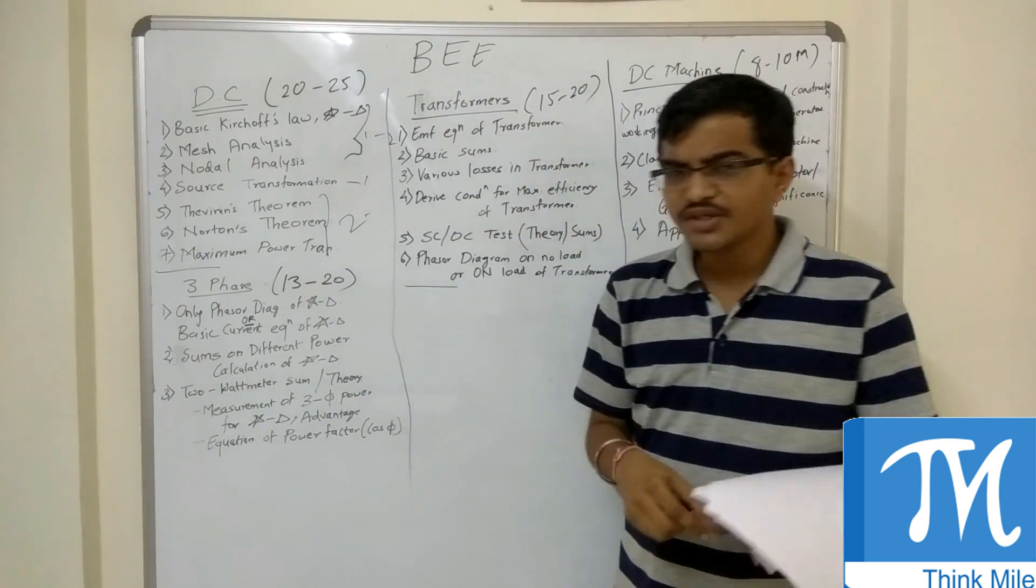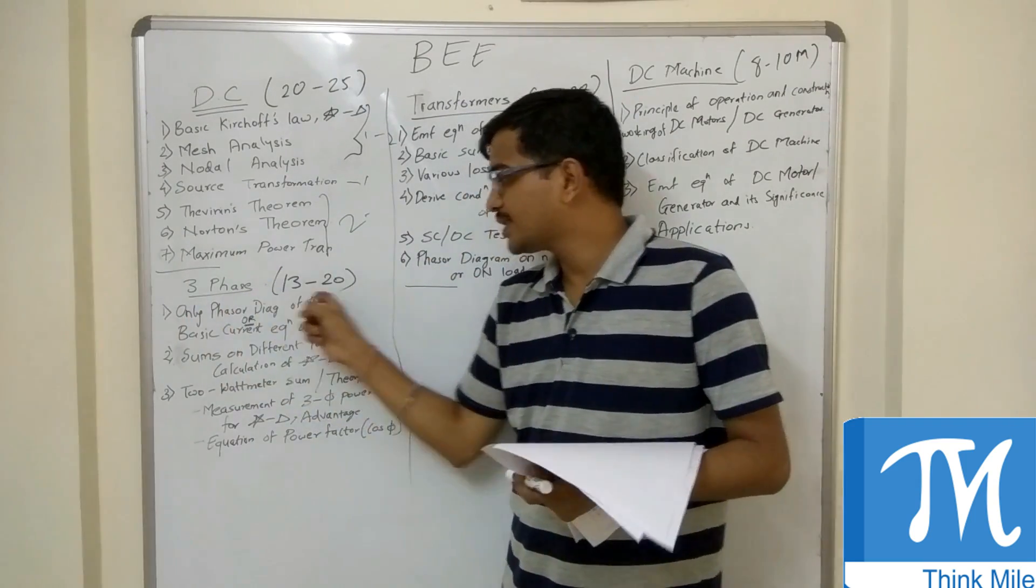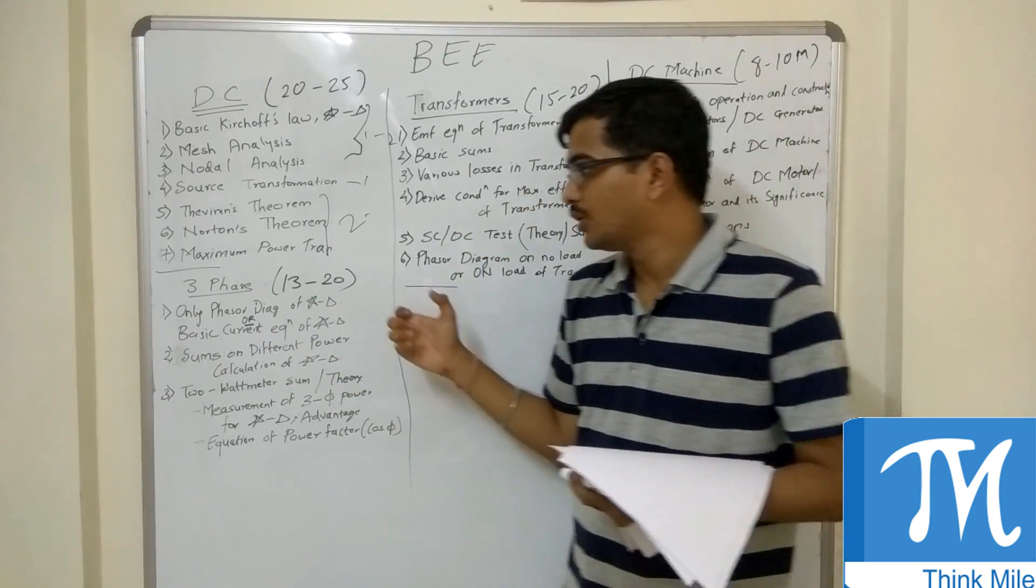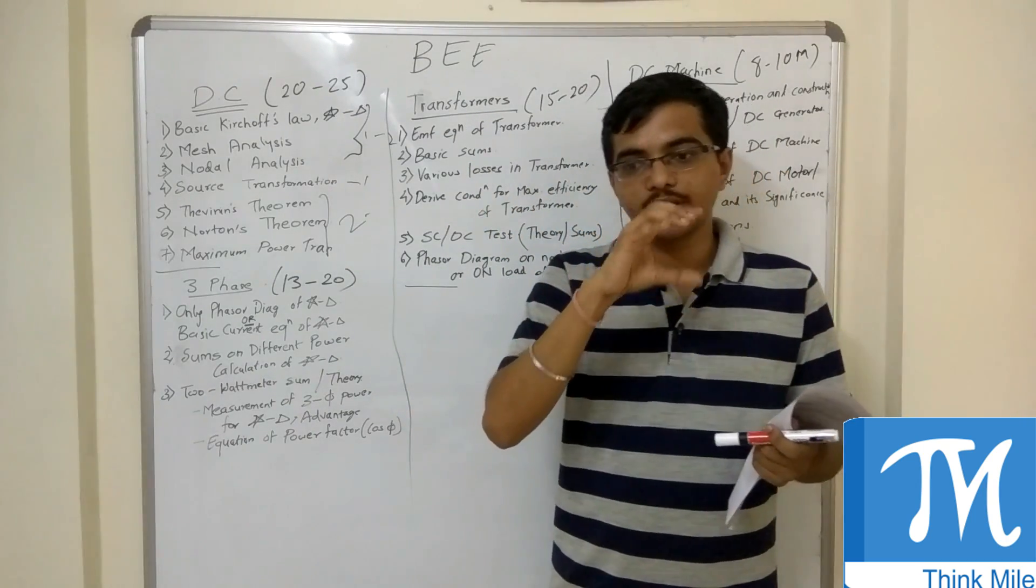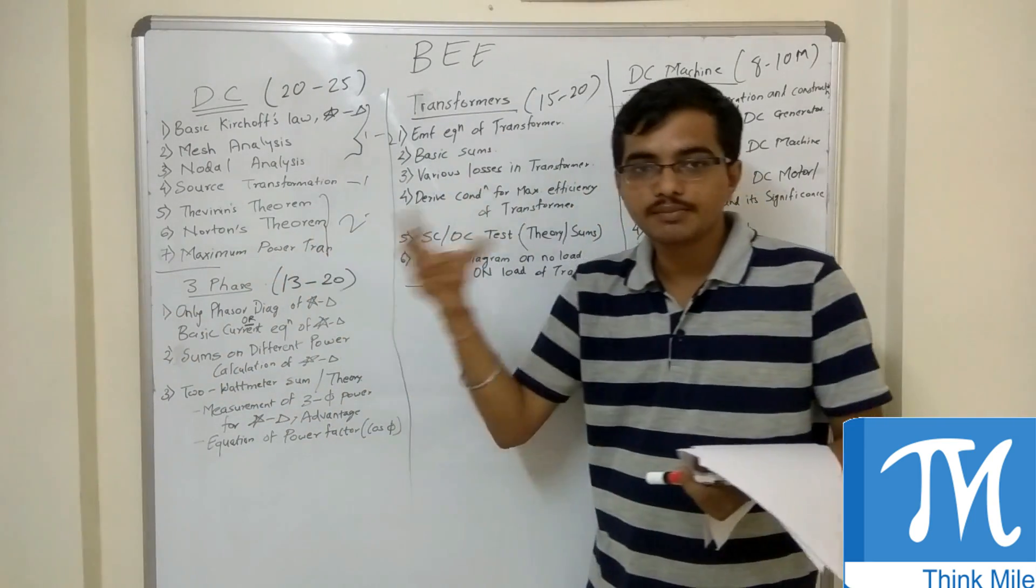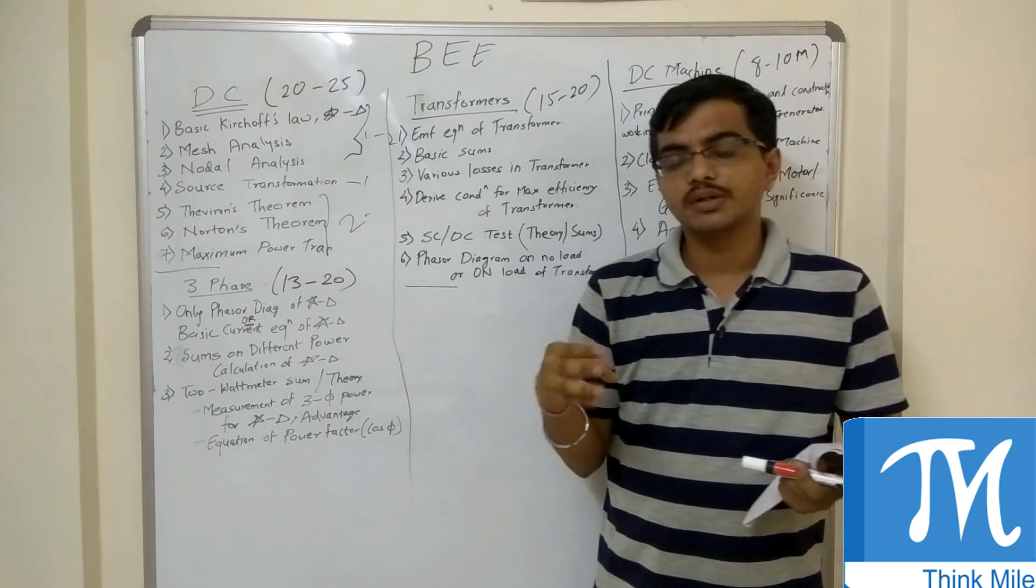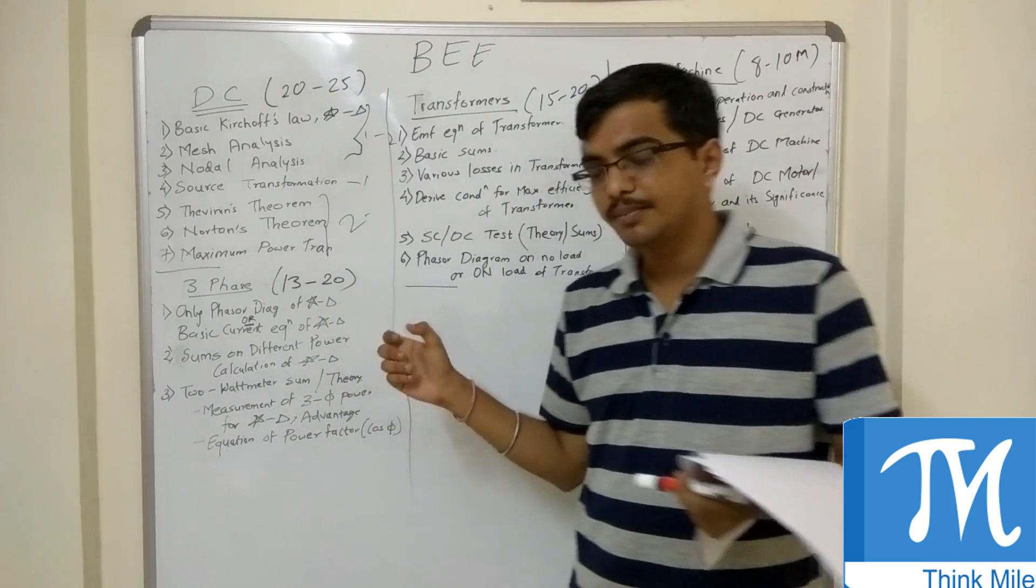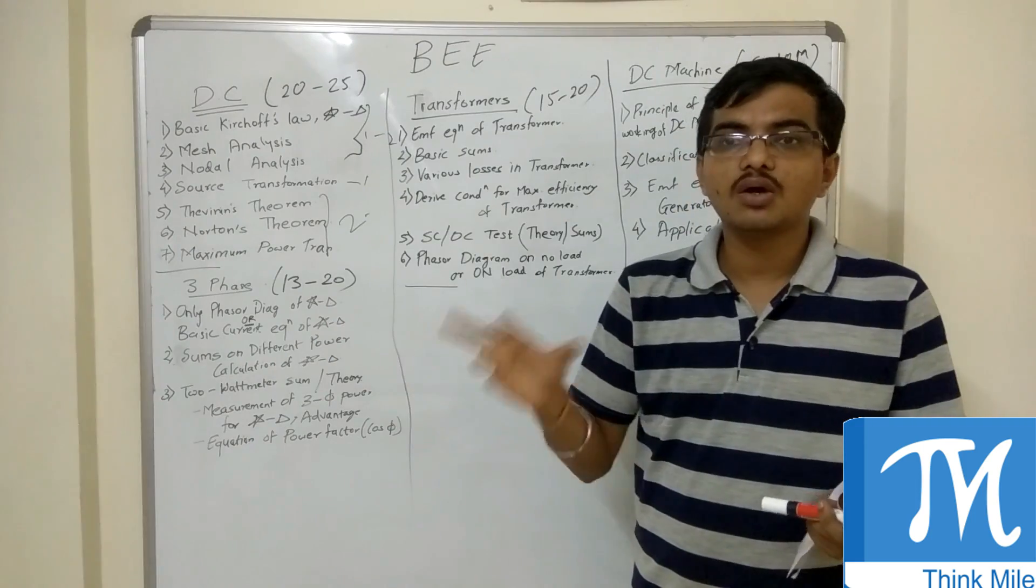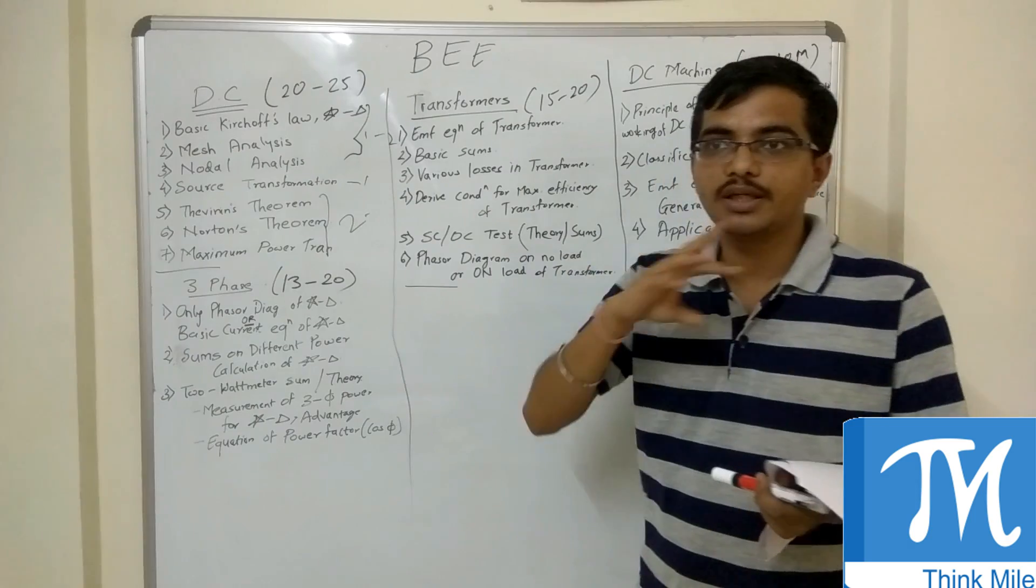Now coming to three-phase. Generally one question on three-phase is in question number one where there is a simple question to draw a phasor diagram of star or delta, or a basic current equation of star or delta. If you see the textbooks, there are phasor diagrams for three-phase star and delta. So they will ask you to draw the phasor diagram or give a simple sum based on star delta basic current equations, or state the formulas for current equations or any relation between star and delta. This question can be asked in question number one for three marks, three to four marks.